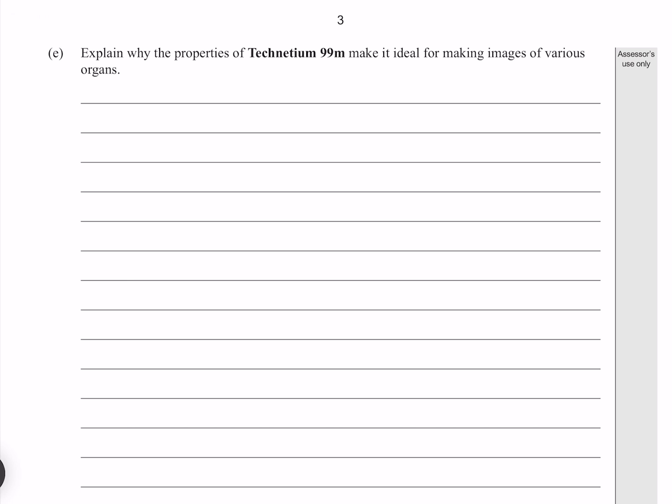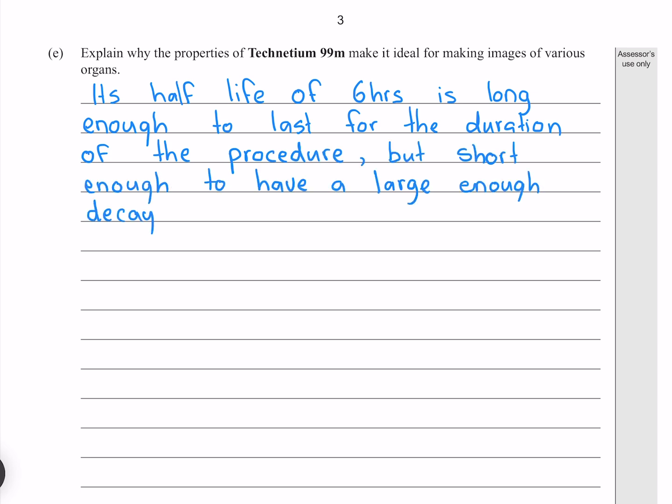Explain why the properties of technetium-99m make it ideal for making images of various organs. Once again, there are a few we could choose from. Its half-life of 6 hours is long enough to last for the duration of the procedure, but short enough to have a large enough decay rate that it will produce radiation with enough intensity to form an image.